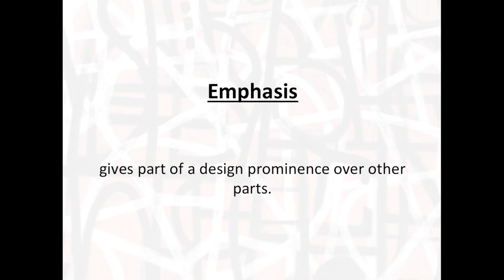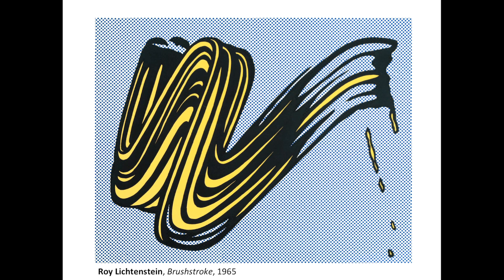Emphasis gives part of the design prominence over other parts of the same composition. It can be achieved through design elements such as color, size, texture, etc. In Roy Lichtenstein's painting, he's painted a brush stroke — that energy of movement across a surface of halftone dots. Emphasis is essentially something that disrupts the flow of other elements: he created a pattern with the dots, and then the brush mark in the foreground interrupts that pattern, becoming a focal point because it's different — it stands out.